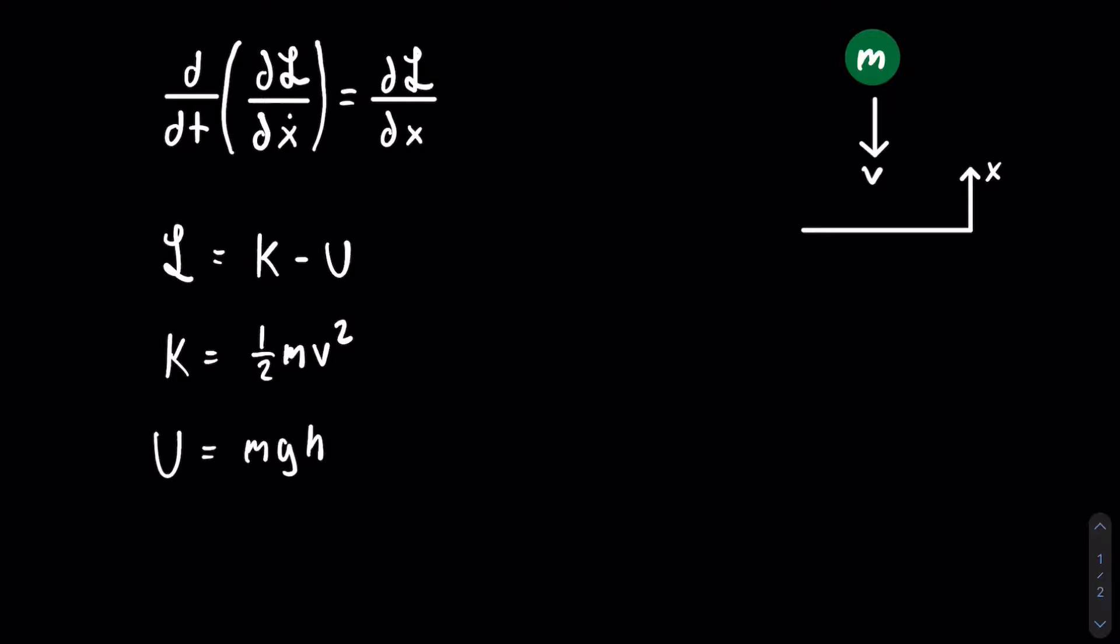That means the height is just x, and that means the velocity is just x dot. So now we can make our kinetic and potential energies. The kinetic energy is just going to be one half m x dot squared. And our gravitational potential energy is just m g x. Now we have everything we need to form our Lagrangian. The Lagrangian is going to be equal to one half m x dot squared minus m g x.